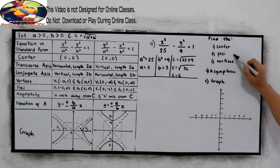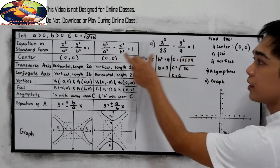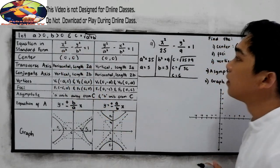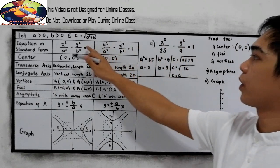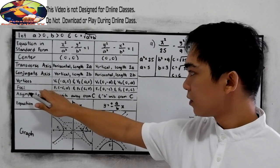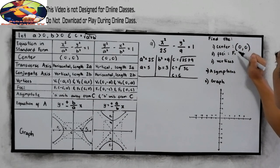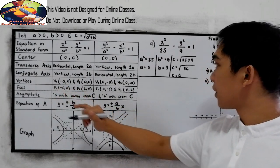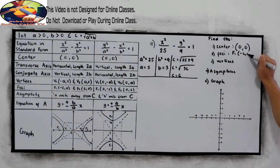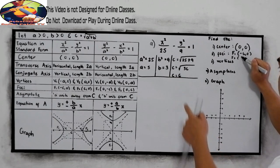We are now ready to find the center, foci, and vertices. Analyzing our given equation — since it is in the x squared over A squared form — our center is automatically (0, 0). For the foci: F sub 1 is at (−C, 0), so with C = 6, F sub 1 is (−6, 0). For F sub 2, we have (C, 0), so F sub 2 is (6, 0).